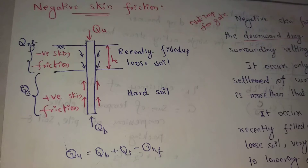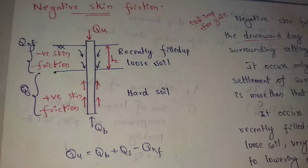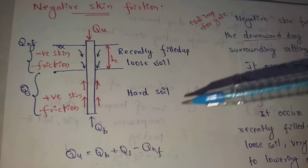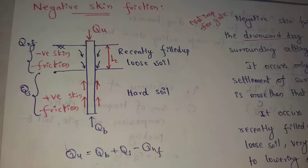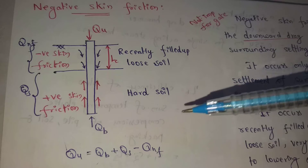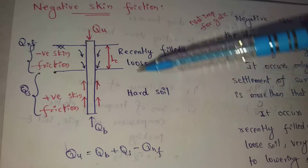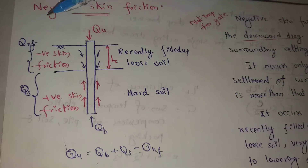Positive skin friction is QS. Finally, the formula is: QU (Ultimate load) = QB (End bearing resistance) + QS (Skin frictional resistance) − QNF (Negative skin frictional resistance).